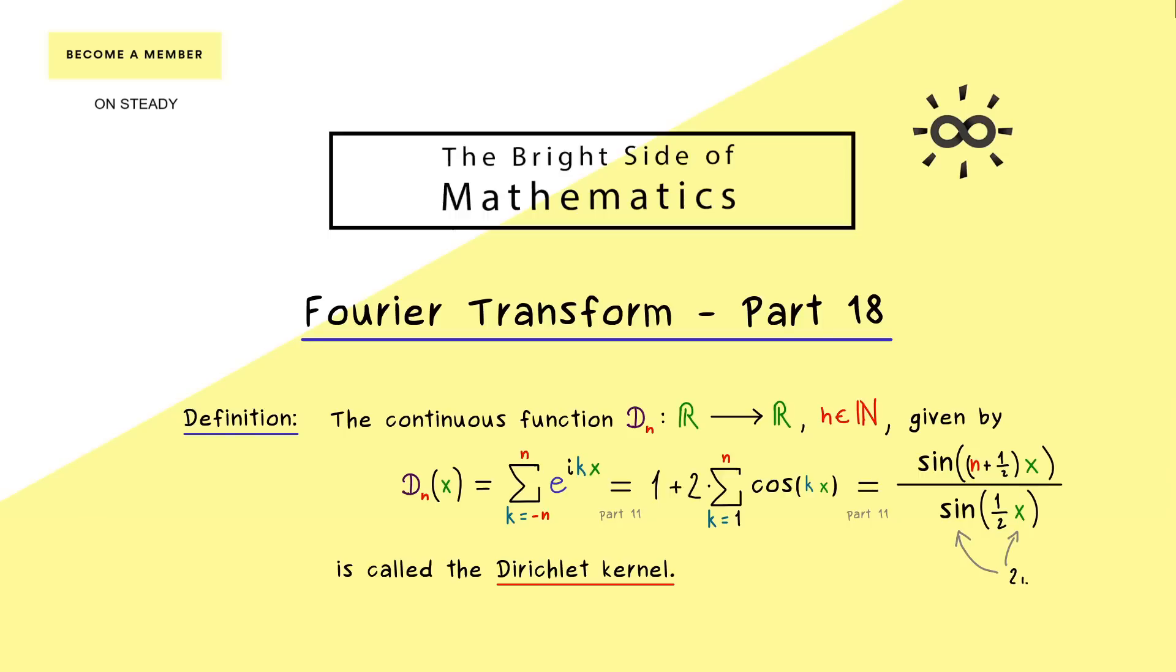The only problem we see there is that we could have zeros in the denominator. Indeed, all numbers of the form 2π m are zeros of this sine function. Hence, for this representation we have a discrete set of exception points, but these are not a problem at all because we already know that we have a continuous function anyway. In other words, we can just uniquely extend the function on the right hand side here at the exception points as well.